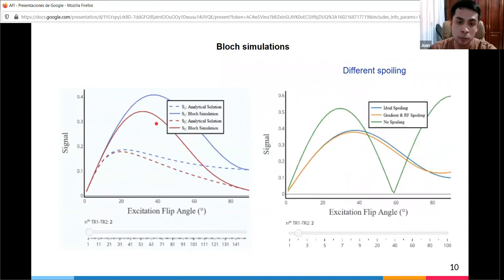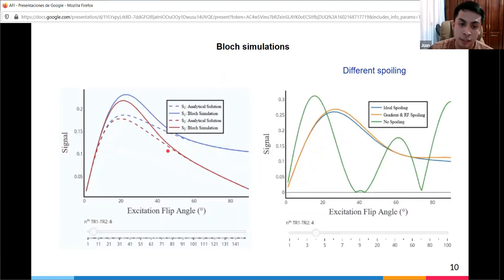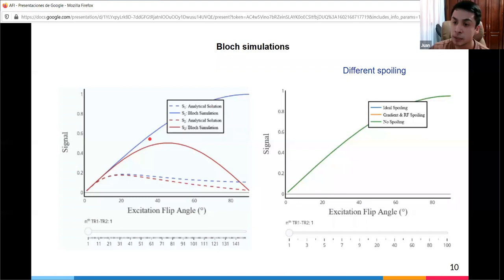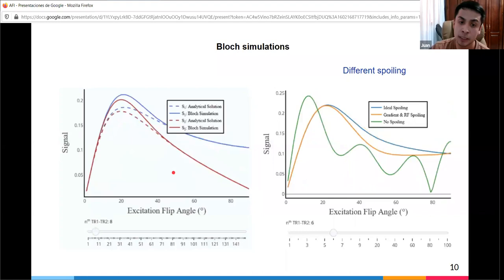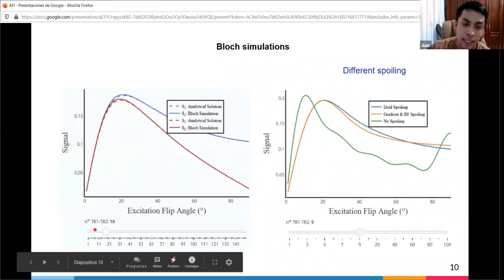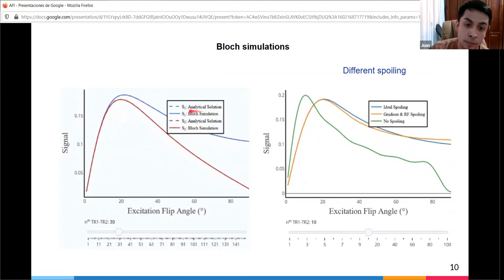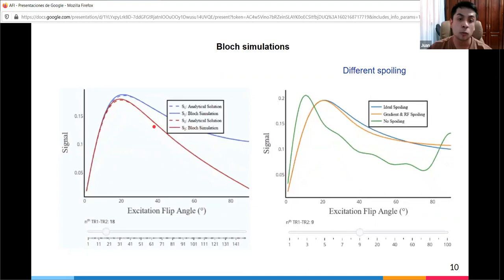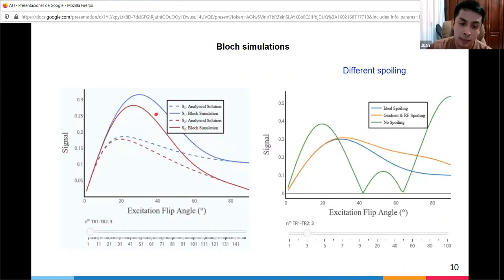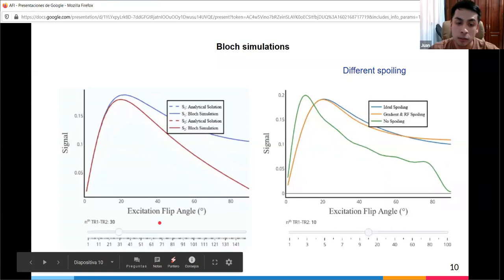The analytical equation assumes longitudinal magnetization has reached steady state after a certain number of repetition times, which is usually long, and that transverse magnetization is completely spoiled after each repetition time. Because fulfilling these conditions is a real challenge in practice, they added a module to run block simulations to provide more reasonable estimates when the signal hasn't reached steady state. At a few repetition times, there's large deviation between the block simulation (solid line) and analytical equation (dashed line). Blue is signal 1, red is signal 2. This depends on both repetition times and excitation flip angle.